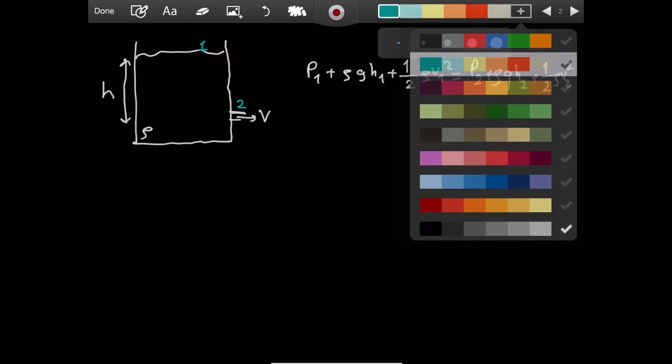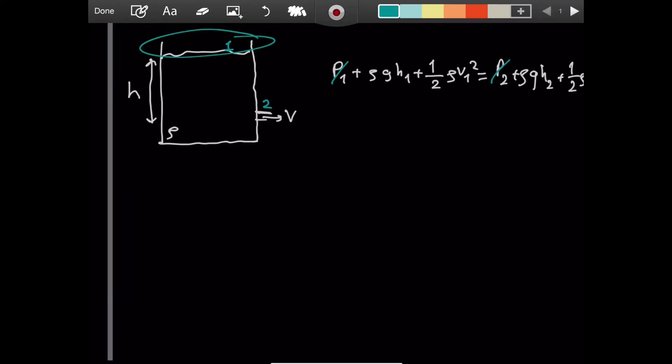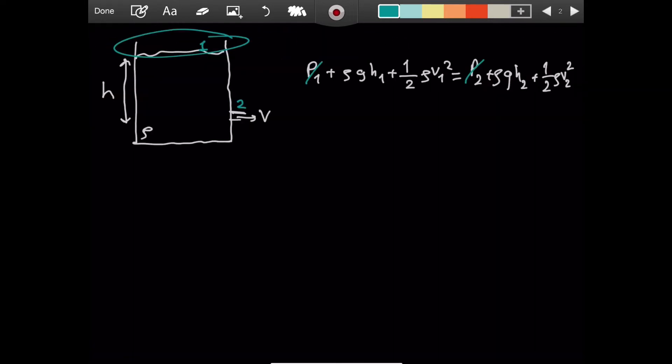Alright, there will be some simplifications. Don't worry. For example, p1 and p2, they are both equal to the atmospheric pressure because the top is open. Like that is also the case in the question. So the top is open, that's why p1 is equal to p2. They cancel. Now, if I select the level at which our hole is at as h0 level, then I can set h2 to be 0. So this cancels.